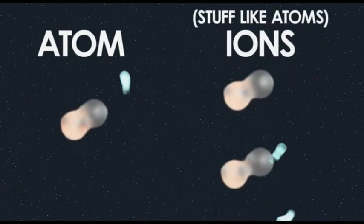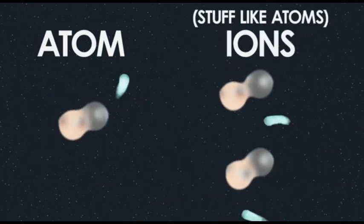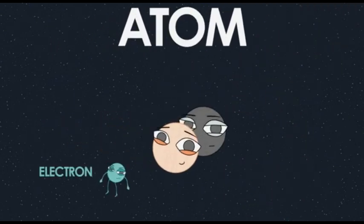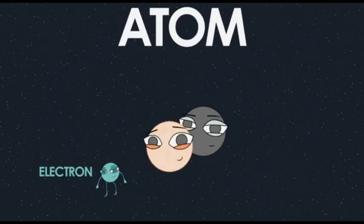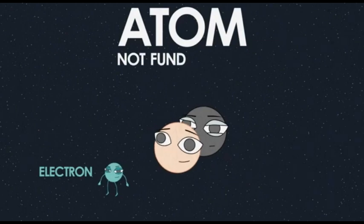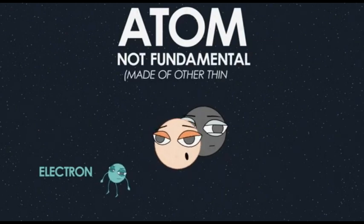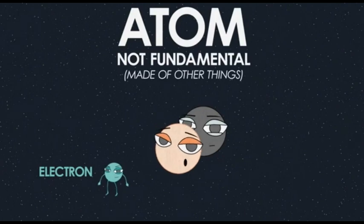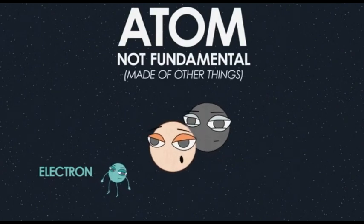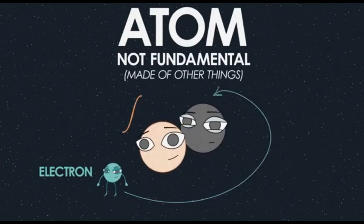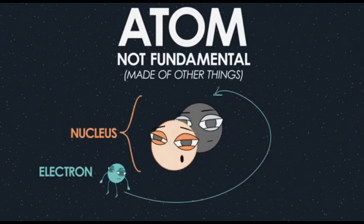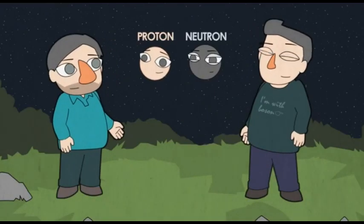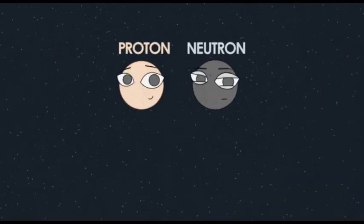Atoms contain electrons, so you can actually cut an atom up into something smaller — atoms are not fundamental, they're made of other things. Atoms are made of electrons, which go around a nucleus, and the nucleus is made of protons and neutrons.